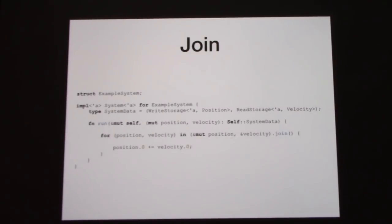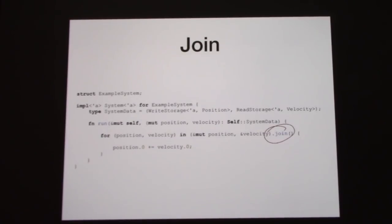Now we get to the join trait, where things actually start to get super interesting. Here we have a more expanded system — we're getting a read storage of positions and a read storage of velocities, and we're going to act on them. The key way we act on this is through this method called join, and what it does is iterate over all components that match the pattern. Everything that has a position and has a velocity will get returned, and we can act on them in a nice for loop.